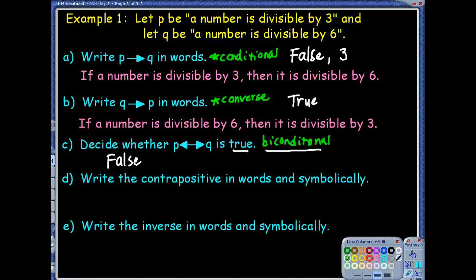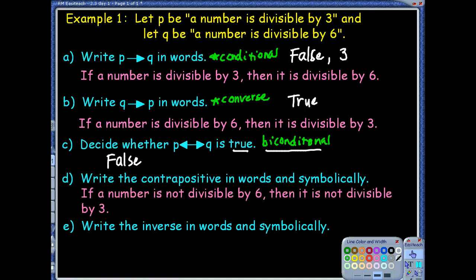Okay. Contrapositive negates the converse. So let me go back to the converse, and I'm going to negate those. Put my nots in. So if a number is not divisible by 6, then it is not divisible by 3. Great.